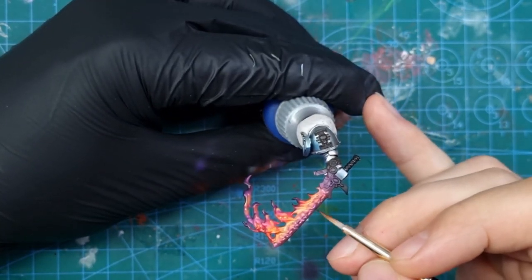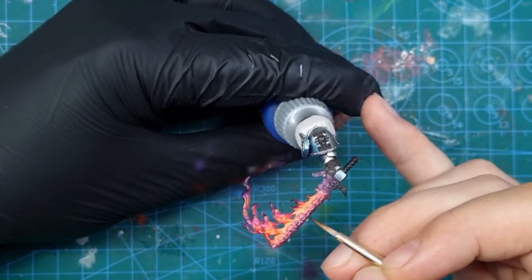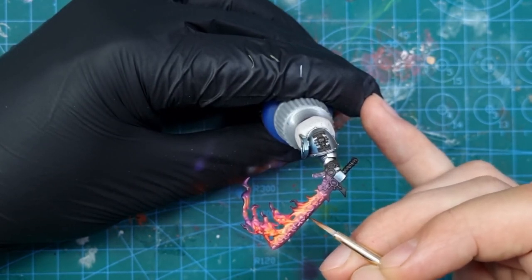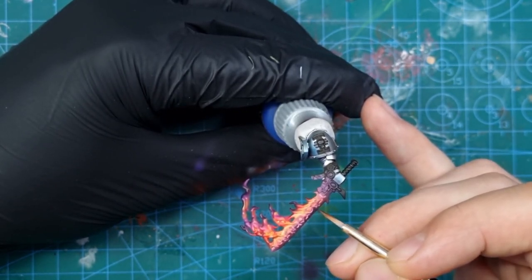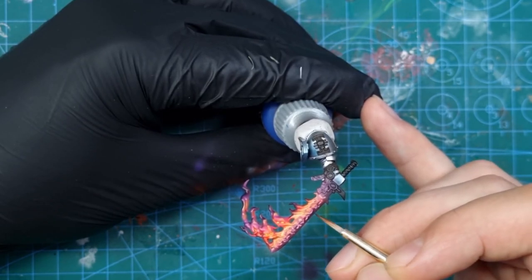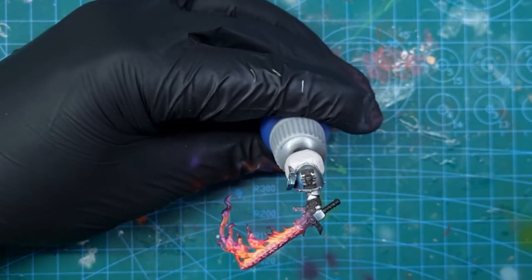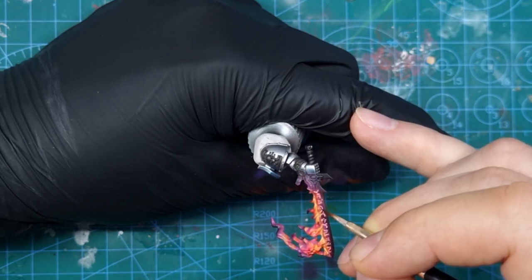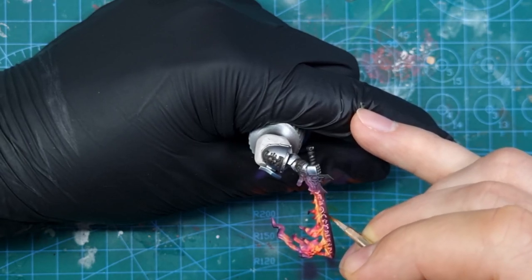The last part is to finish the blade itself. I want to keep it dark, so I mix the previously used purple color with black paint and I will paint the lower side of the blade, focusing on the areas between the runes, as it will create our maximal contrast and the final glowing effect here.